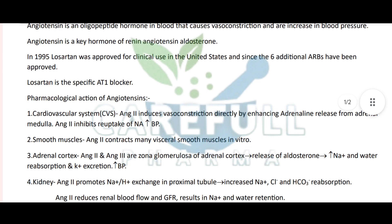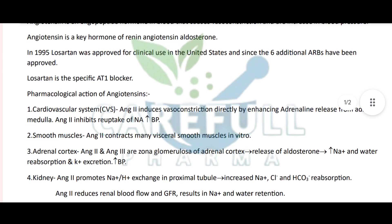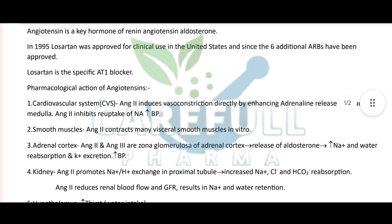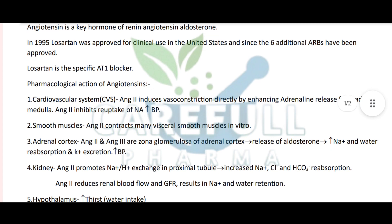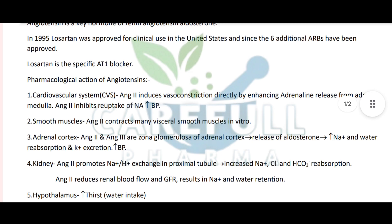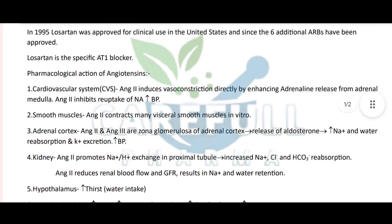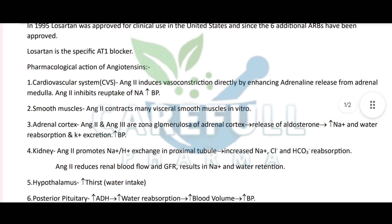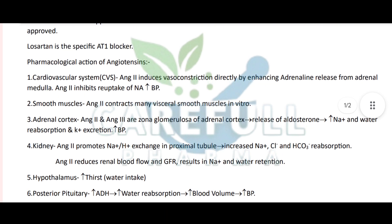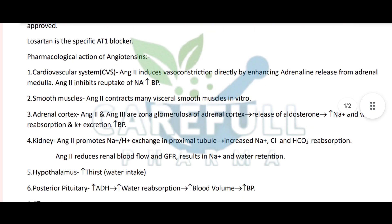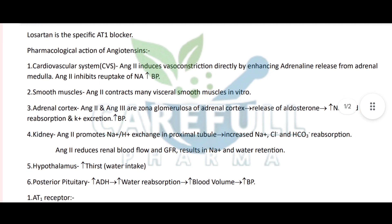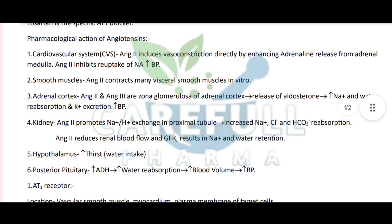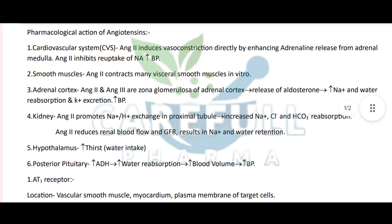Pharmacological Actions of Angiotensin: 1. Cardiovascular System (CVS) - Angiotensin II induces vasoconstriction directly by enhancing adrenaline release from adrenal medulla, and inhibits reuptake of noradrenaline. 2. Smooth Muscles - Angiotensin II contracts many visceral smooth muscles in vitro. 3. Adrenal Cortex - Angiotensin II and Angiotensin III act on the zona glomerulosa of adrenal cortex to cause release of aldosterone, Na+ and water reabsorption, and K+ excretion, increasing BP.